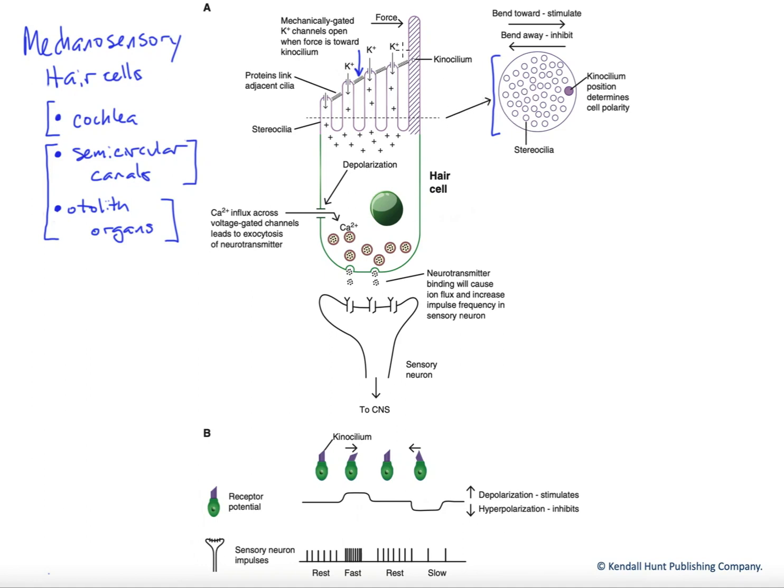Now strangely enough, our depolarizing flux is caused by potassium. That's odd, and that's true because hair cells in all of these locations are always found—the hairs of the hair cells are always found in a solution called endolymph.